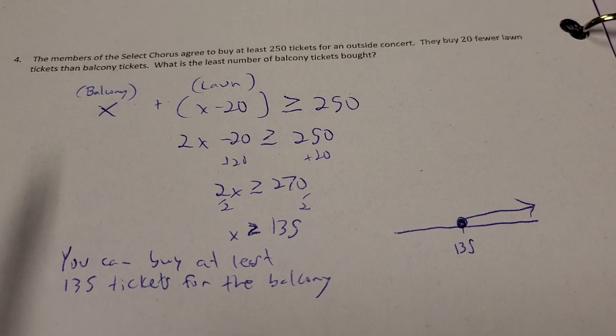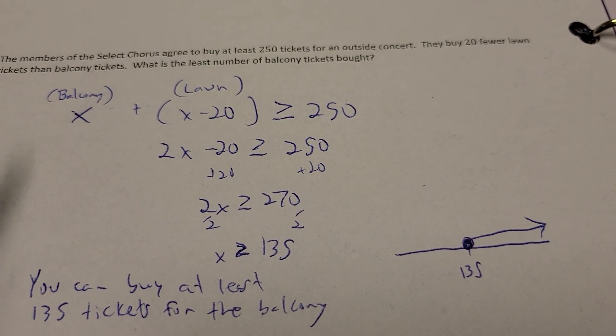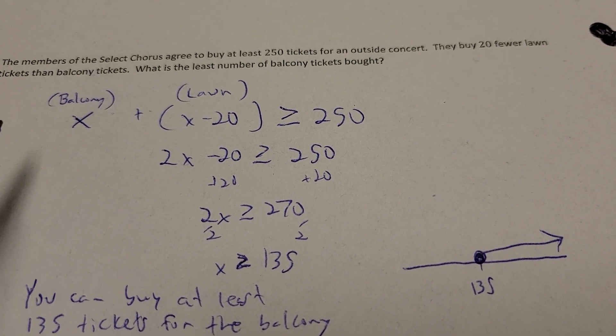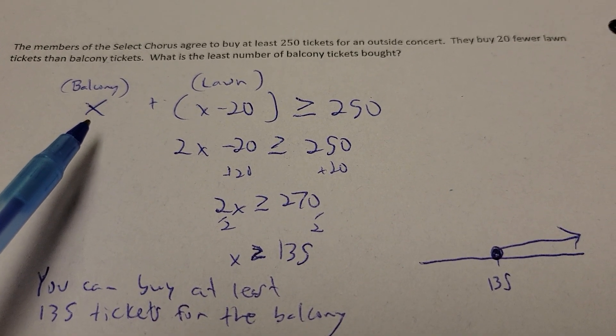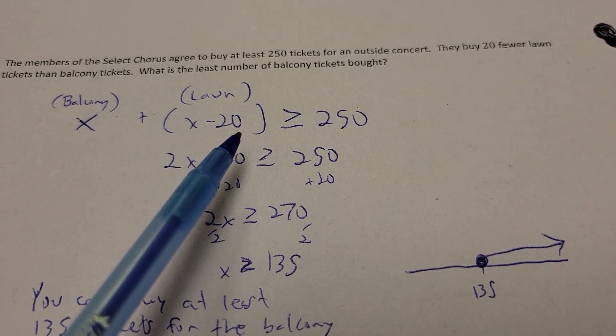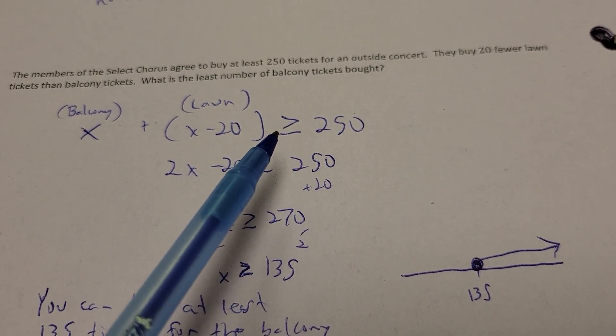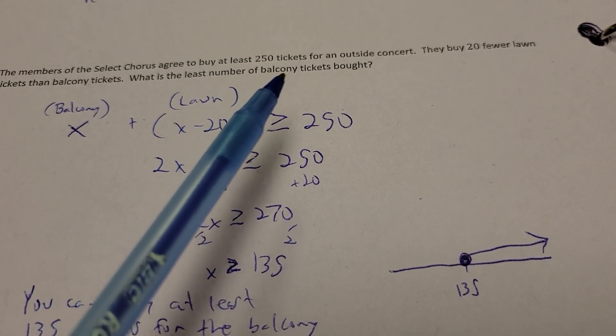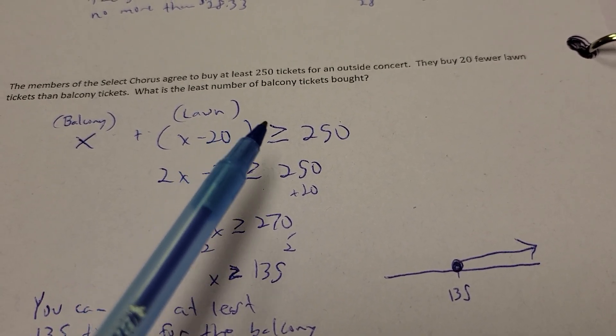Next up, the three members of the select chorus agree to buy at least 250 tickets for an outside concert. They buy 20 fewer lawn tickets than balcony tickets. What's the least number of balcony tickets bought? Well, balcony is going to be X, because I don't know anything about them. And the lawn tickets, it's whatever the balcony is, minus 20, because there's 20 fewer of the lawn tickets. Now, all that can be greater than or equal to 250, because it has at least 250 tickets. So, it can be equal to that or more.